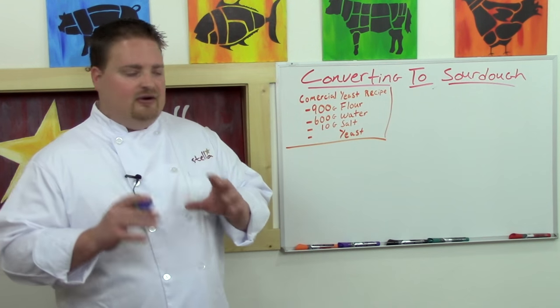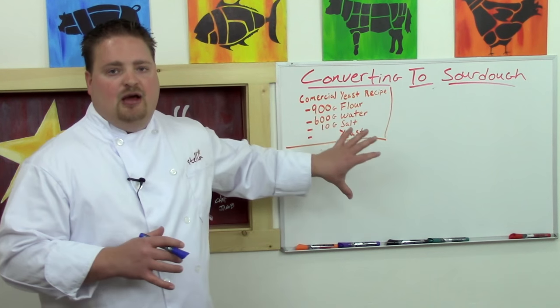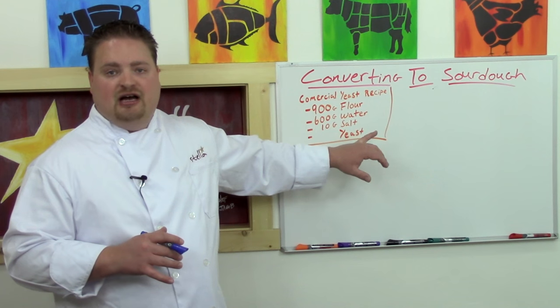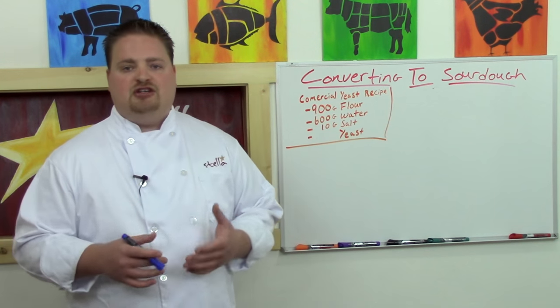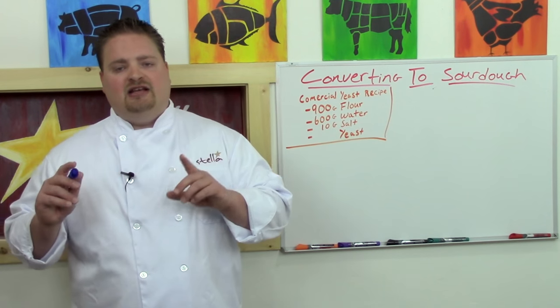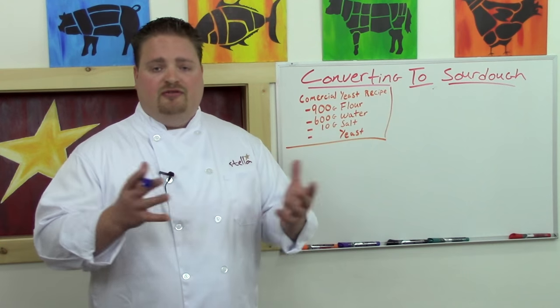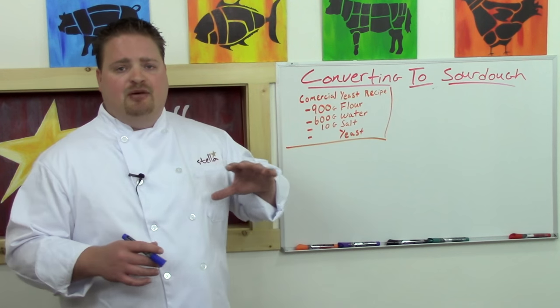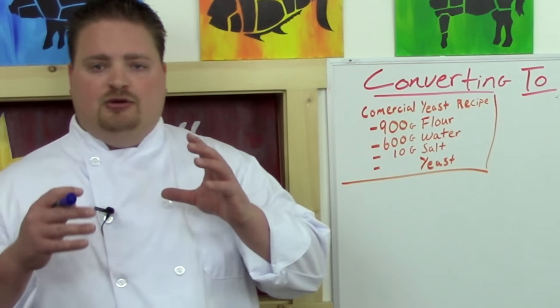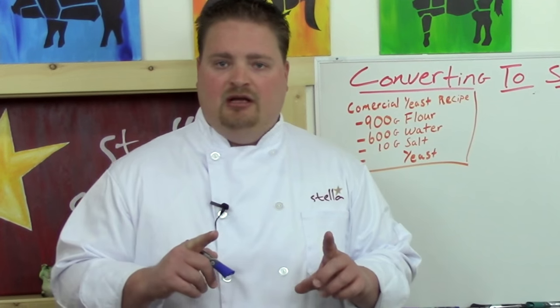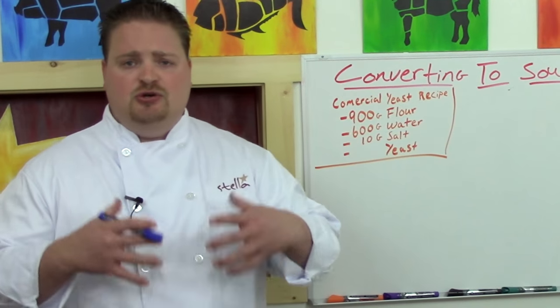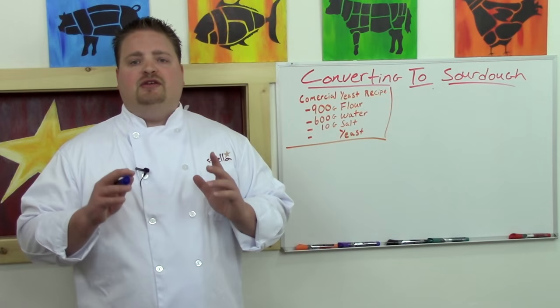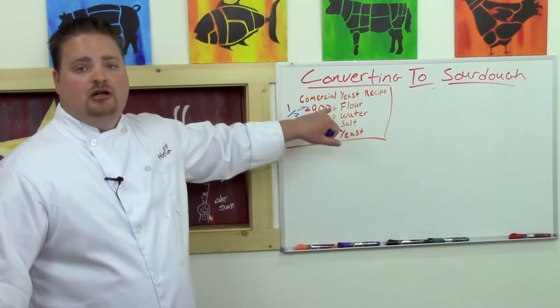For argument's sake, let's say we have a commercial bread dough recipe like this and we want to switch it to sourdough. If you want to get your sourdough bread done in one day's time, the fastest that usually occurs is about a three to four hour bulk fermentation and a one and a half to two hour proofing stage. The way that you do that is by making one third of your flour come from your starter.